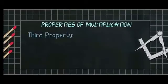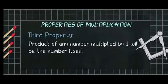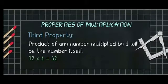Now the third property. The product of any number and 1 is the number itself. For example, 32 into 1 is equal to 32 and 65 into 1 is equal to 65.